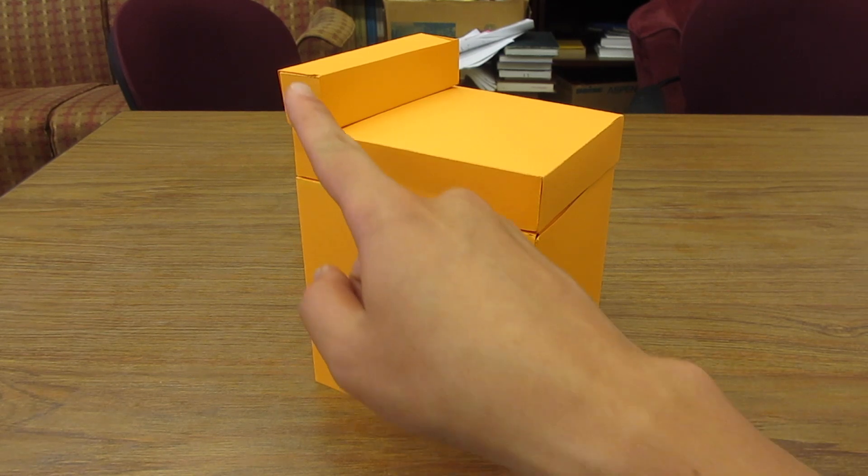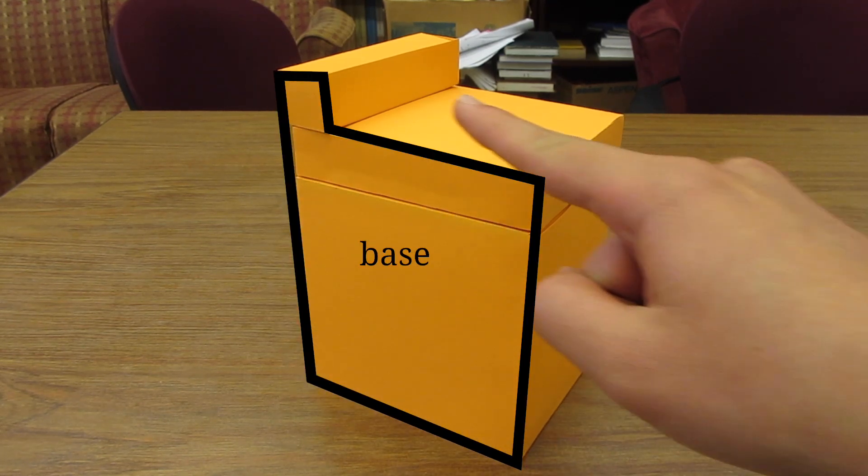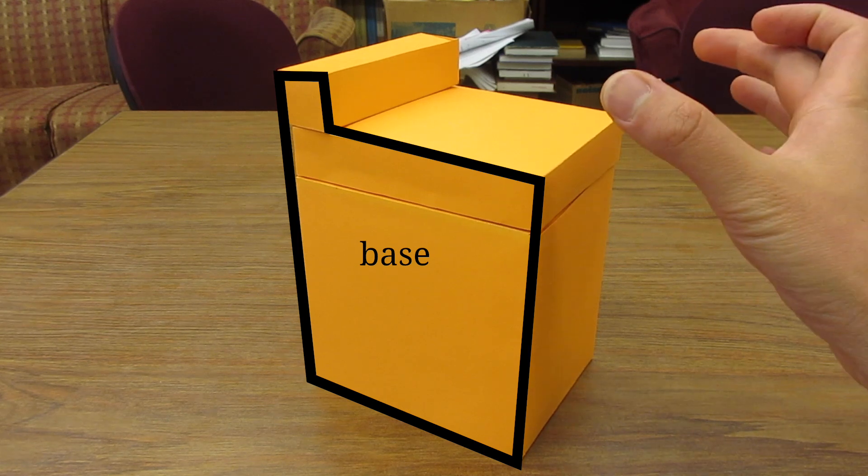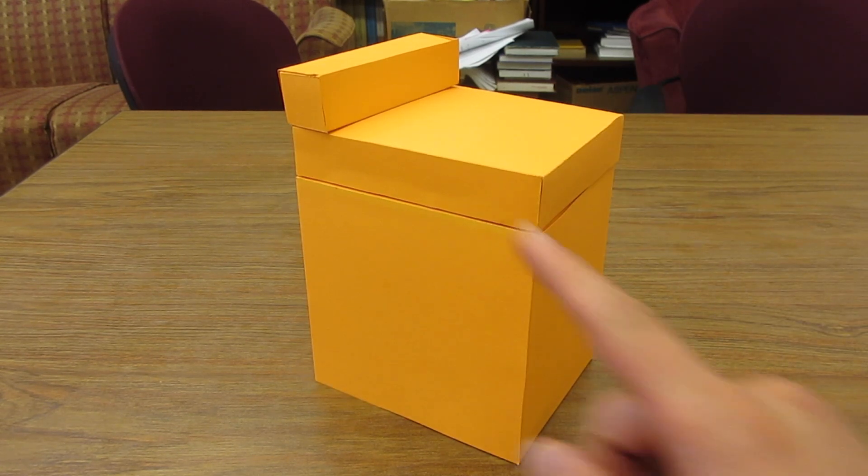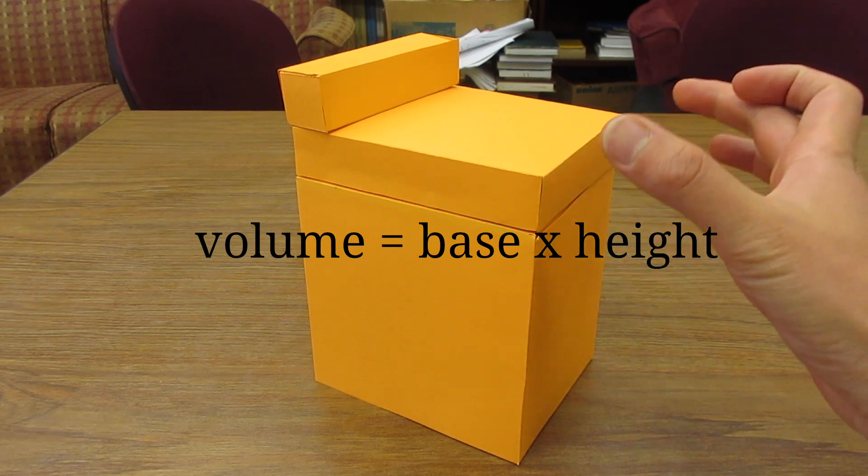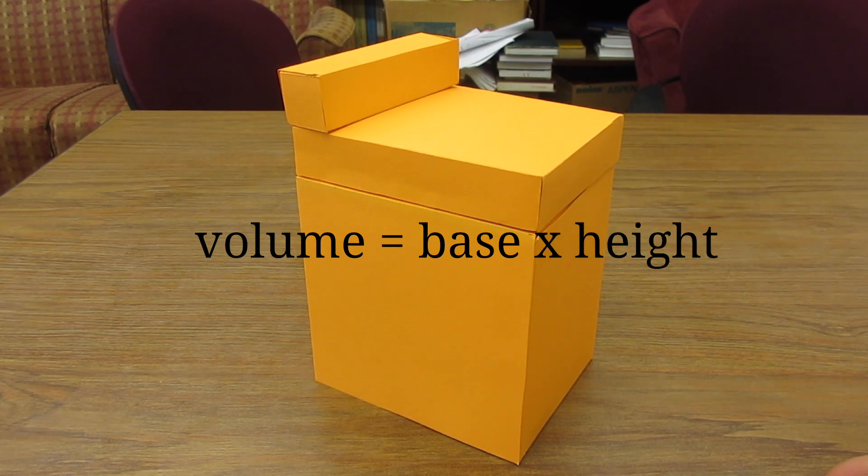The formula that we're gonna be using is, we're gonna think of this part as the base and this part as the height. So the volume of this solid is gonna be the area of the base times height. What's the area of the base?